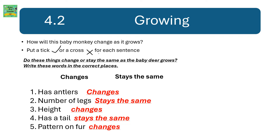Has antlers — it changes. Number of legs — stays the same. Height — changes. Has a tail — stays the same. Pattern on fur — changes.